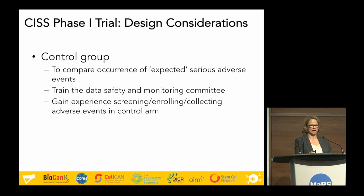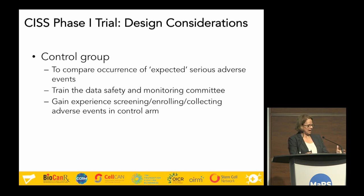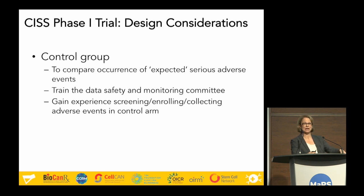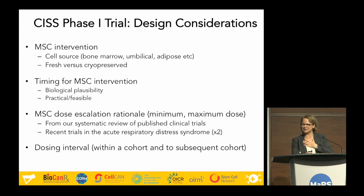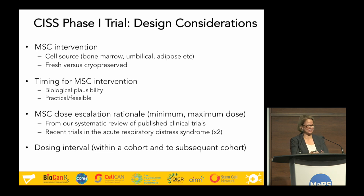That control group was important to compare adverse event rates in the interventional group, since these are very early phase regulated trials and you need a feel for how common these events are just by virtue of patients being very ill. It also gave the DSMC committee the opportunity to train before the interventional arms started, so they understood the occurrence of adverse events in this population. We won't go into full GMP manufacturing details today, but we did need to think about our cell source — we went with bone marrow because at the time those MSCs were the most well-studied cells in preclinical studies.